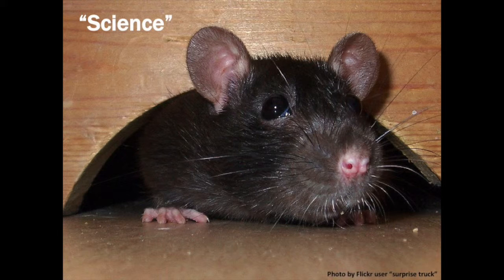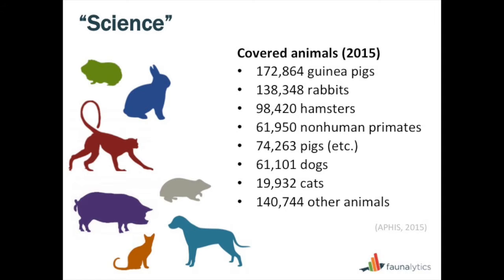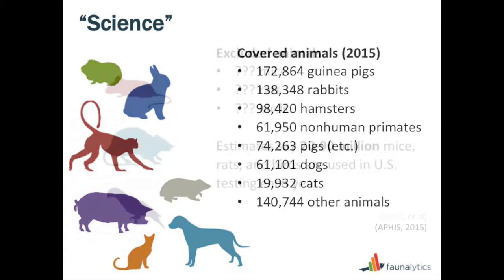For the other animals, there are two stories to tell. Certain species used in research are covered under the Animal Welfare Act, and others are not. Much to the delight of the pharmaceutical industry and researchers, the ones not covered are used most frequently. Among those covered under the Animal Welfare Act, we see large numbers of guinea pigs and rabbits, as well as a fair number of dogs, cats, and primates. This adds up to a little over 750,000. The good news is that number has actually declined since about 1992.